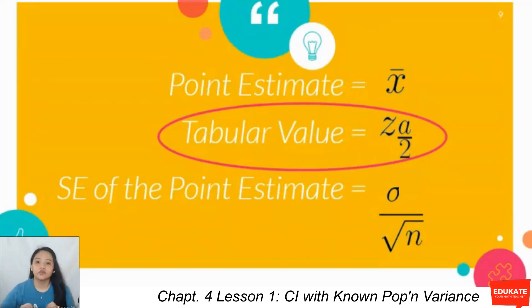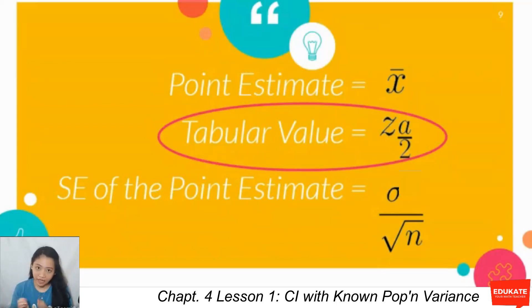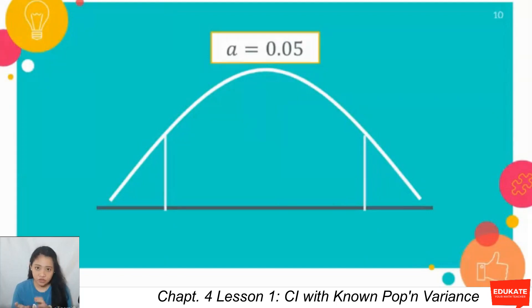Breaking down the formula: you have your point estimate which is the sample mean, your tabular value, and then your SE or standard error of the point estimate. The SE of the point estimate with a known population variance is computed as standard deviation over square root of n. For the tabular value, we use the notation Z sub α/2 from the Z distribution table, whose area to its right is equal to α/2.